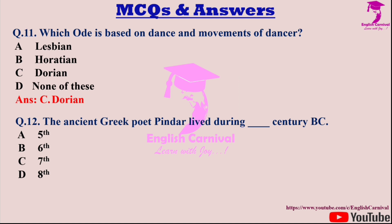Question twelve: The ancient Greek poet Pindar lived during the — dash — century BC. Options are A: Fifth; B: Sixth; C: Seventh; and D: Eighth. Correct answer is A — he lived during the fifth century BC.